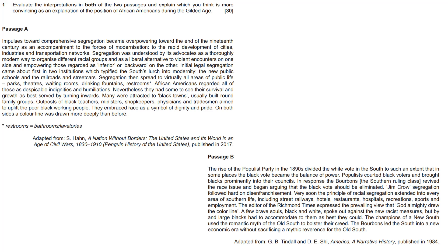Passage B talks about disenfranchisement and segregation without focusing on any positive or compensatory element for African-Americans. Passage B is generally painting a bleaker picture than Passage A. Since our argument for this period is that it was a particularly bleak picture, Passage B is therefore more convincing.